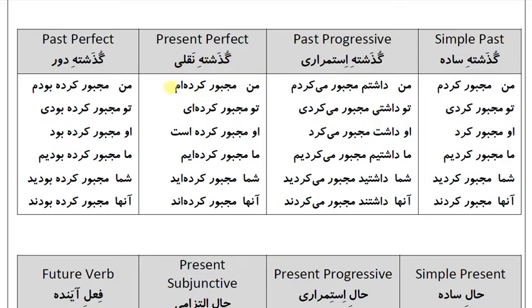گذشته نقلی (Present Perfect): من مجبور کرده‌ام، تو مجبور کرده‌ای، او مجبور کرده است، ما مجبور کرده‌ایم، شما مجبور کرده‌اید، آنها مجبور کرده‌اند.